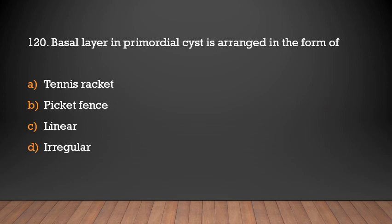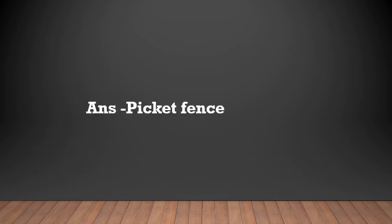The basal layer of the primordial cyst is arranged in the form of: tennis racket, picket fence, or linear/regular? Answer: Picket fence.